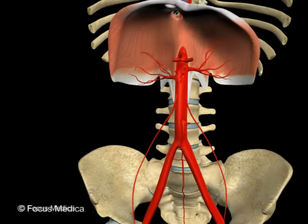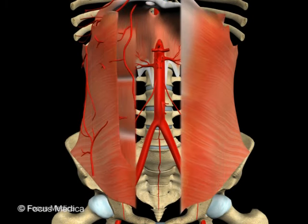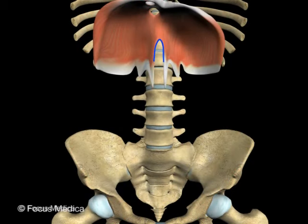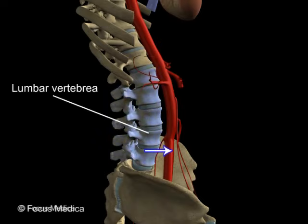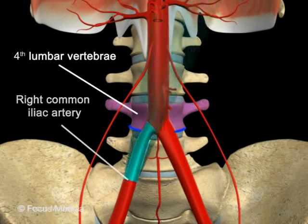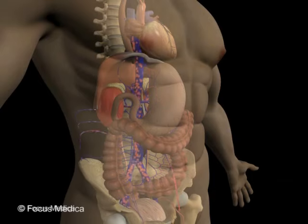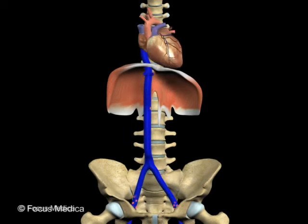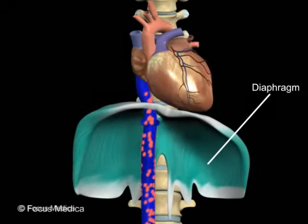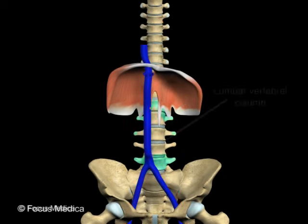The aorta is the principal blood supply to the abdomen and regions below it, supplying both the abdominal viscera and the abdominal wall through several visceral and somatic branches. It enters the abdomen at the aortic hiatus of the diaphragm, descends vertically and retroperitoneally in front of the lumbar vertebrae, and divides at the lower border of the fourth lumbar vertebra into the right and left common iliac arteries. The inferior vena cava is formed by the union of the common iliac veins at the level of the fifth lumbar vertebra, passes vertically upwards through the diaphragm, and drains into the lower part of the right atrium, running on the right side of the abdominal aorta.